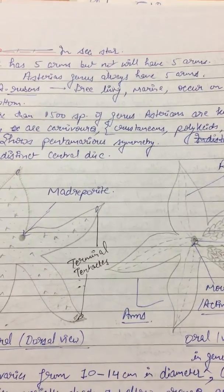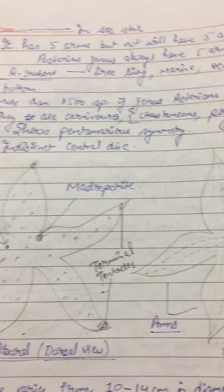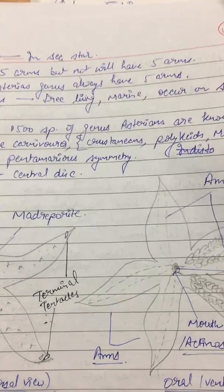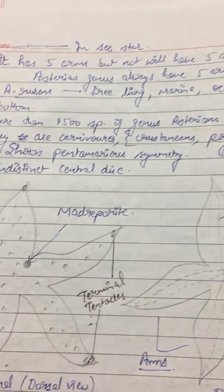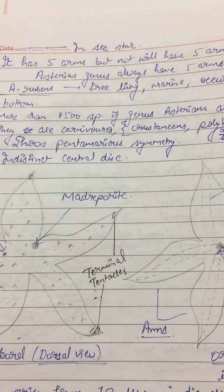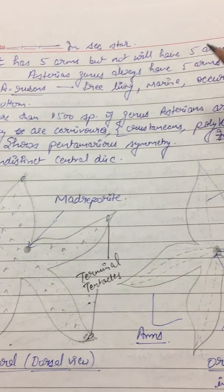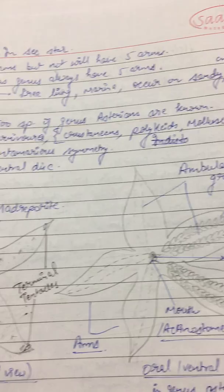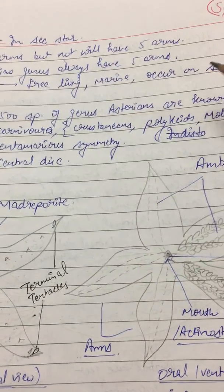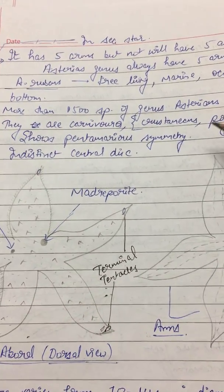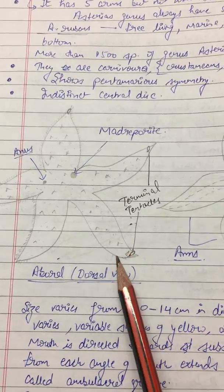Asterias generally has 5 arms, though it can have more. They are free-living marine organisms found on sandy or muddy bottoms. More than 1500 species of the genus Asterias are known. They are carnivorous, feeding on crustaceans, polychaetes, and molluscs. They show pentameral symmetry.